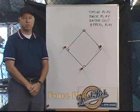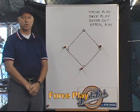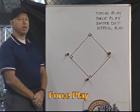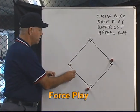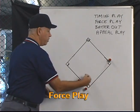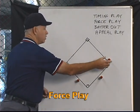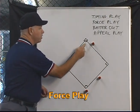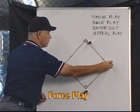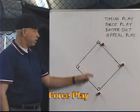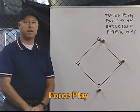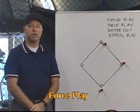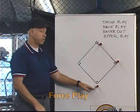Now we're going to give an example where the run doesn't score because the third out was the result of a force play. In this situation we have two outs, runners on first and third, and the runner gets a good jump and takes off as the batter hits the ball. Ground ball to the shortstop, throws to second base. This runner touches home plate before the force out at second. Even though he touched the plate before this out, in this case it's not a timing play — this runner was forced to advance. If the third out is the result of a forced play, no run can score. So in this play, this run does not count.